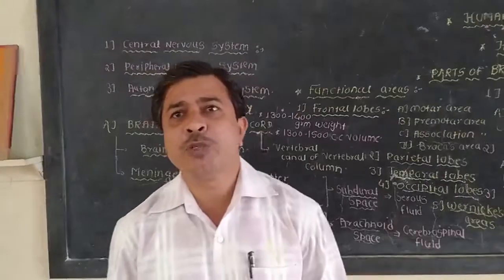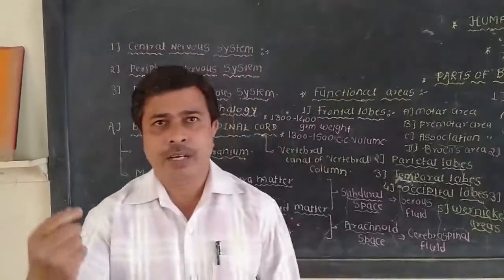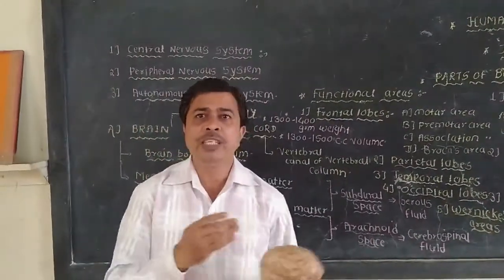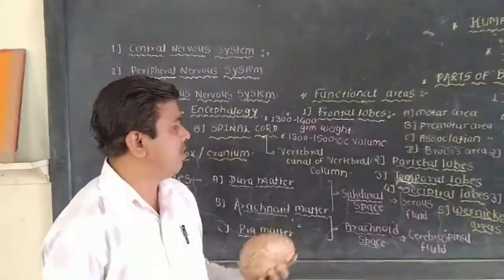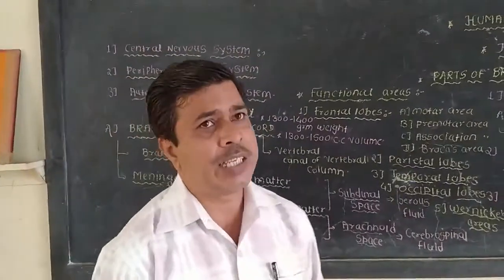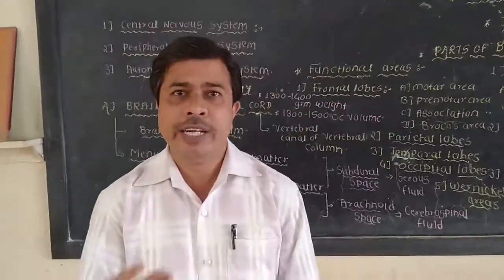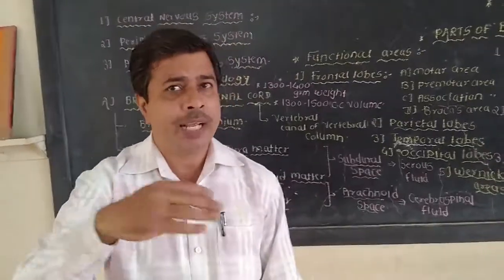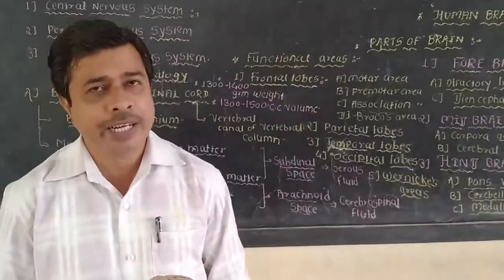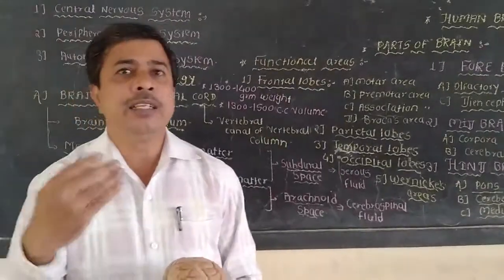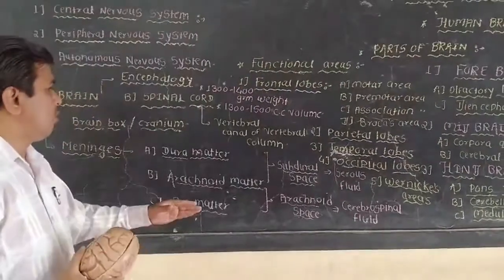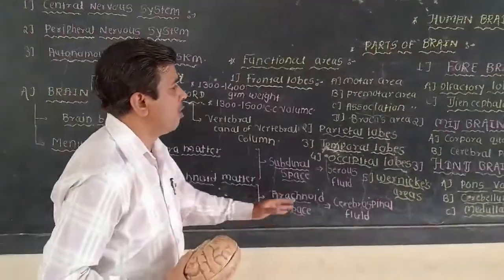The cerebrospinal fluid is present in the different ventricles — cavities present in the brain — and in the vertebral canals of the spinal cord. This cerebrospinal fluid is the most important fluid in the nervous system.